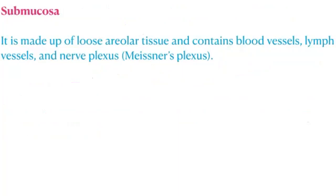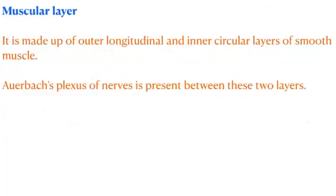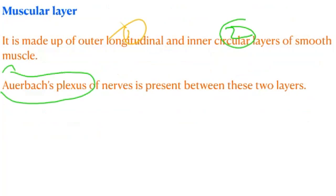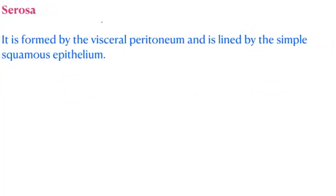The submucosa layer is made up of loose areolar tissue and contains blood vessels, lymph vessels, and Meissner's plexus. The muscular layer is made up of an outer longitudinal and inner circular layer of smooth muscle. Auerbach's plexus, or myenteric plexus, is present between these two layers. The serosa is formed by the visceral peritoneum.